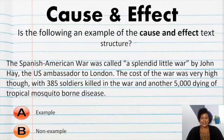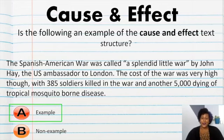Let's try another one to see if this can be a cause and effect text structure. The Spanish-American War was called a splendid little war by John Hay, the U.S. Ambassador to London. The cost of the war was very high, though with 385 soldiers killed in the war and another 5,000 dying of tropical mosquito-borne disease. Is this an example of cause and effect text structure? If you said yes, you are right. The cause here is the war and the effect was, of course, the soldiers dying, but also that they got infected by the mosquitoes in the tropics.